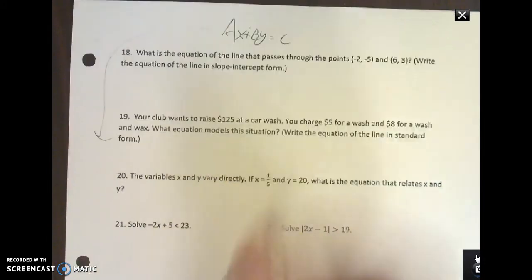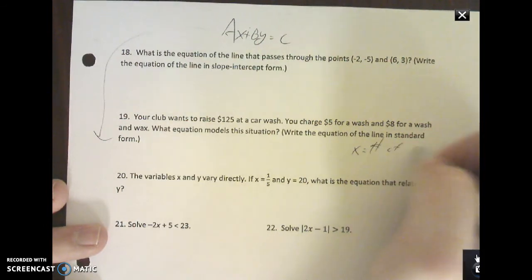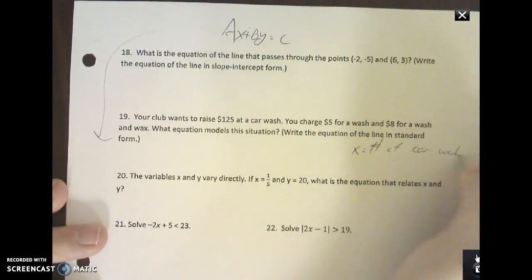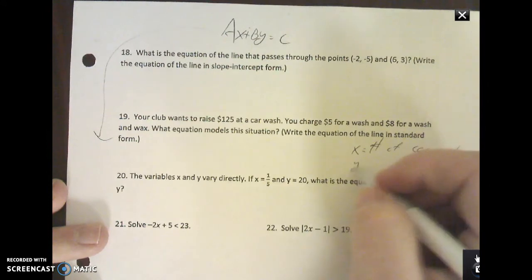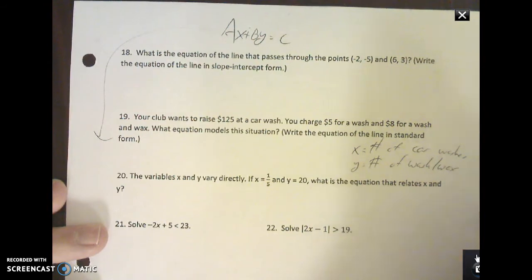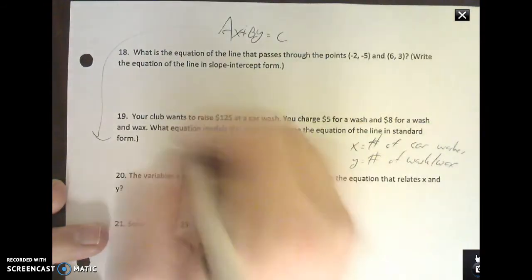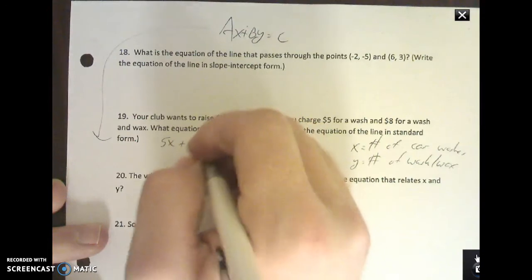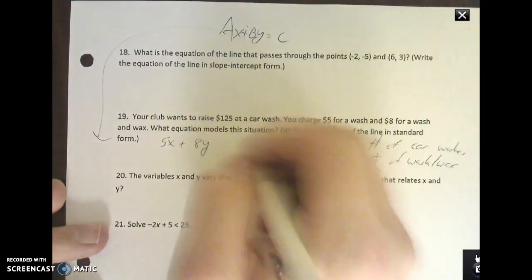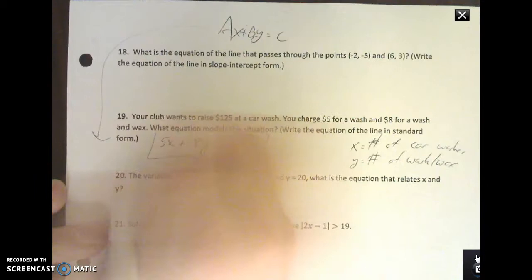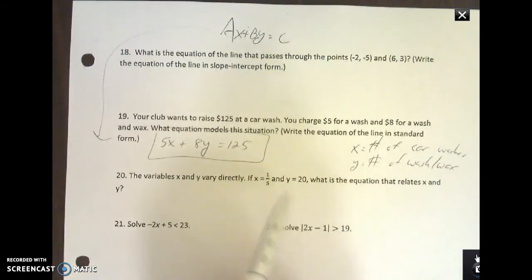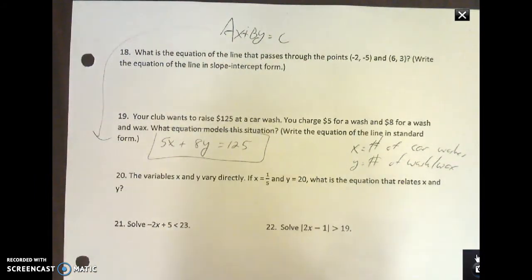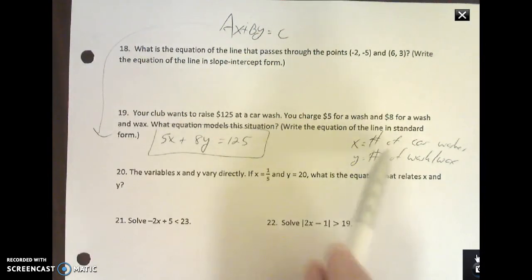I'm going to call x the number of car washes and call y the number of wash slash wax. So it's five dollars for a wash, so 5x plus 8y, eight dollars for a wash and wax, and that equals one hundred twenty-five dollars. It's a multiple choice test, you can kind of choose ABC or D, but if you were doing this on an open-ended question for like the SAT, make sure you label everything to the right. Back to 18, my bad.